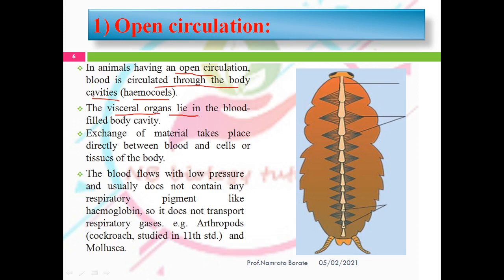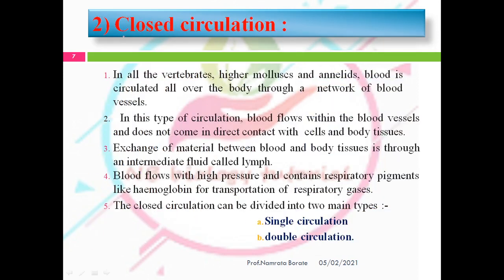In open circulation, the visceral organs are embedded in a blood-filled body cavity. Exchange of materials takes place directly between the blood and the cells or tissues of the body. Blood flows with low pressure and usually does not contain respiratory pigments — meaning hemoglobin is absent — so the color of the blood is white. It does not transport respiratory gases. Examples include arthropods such as cockroach, and molluscs.